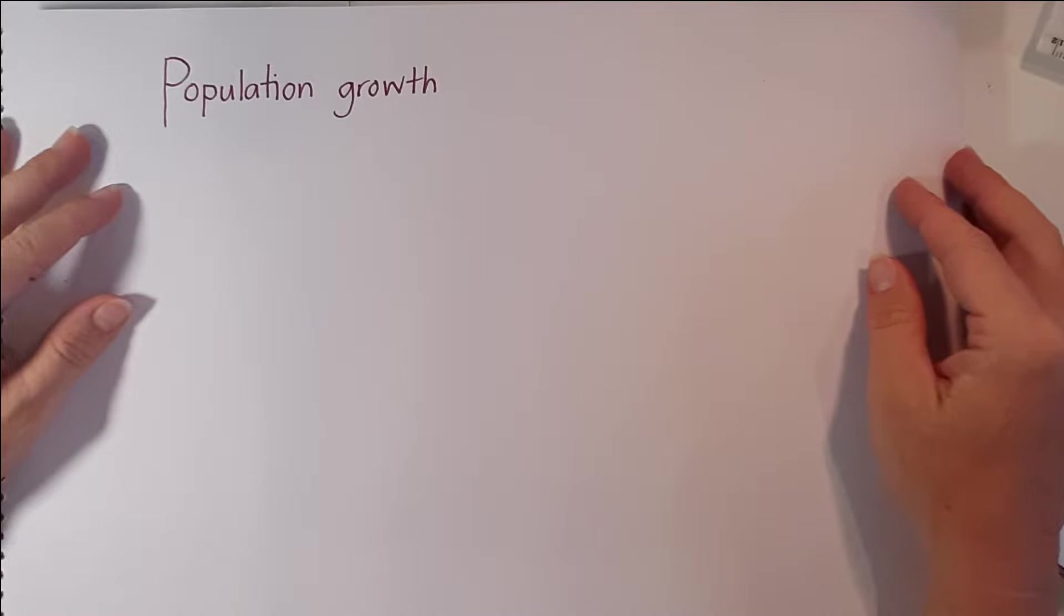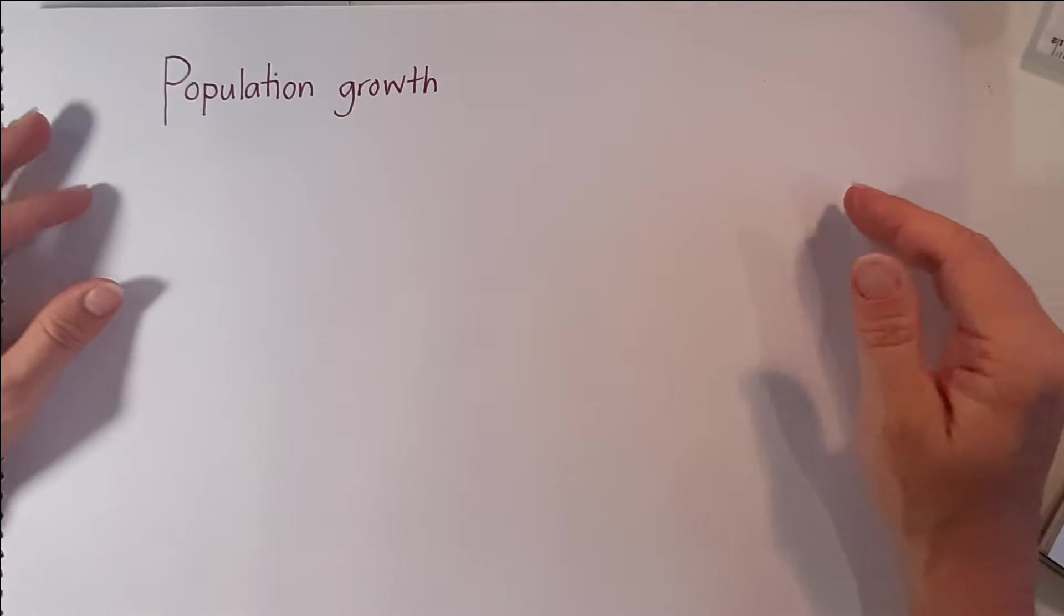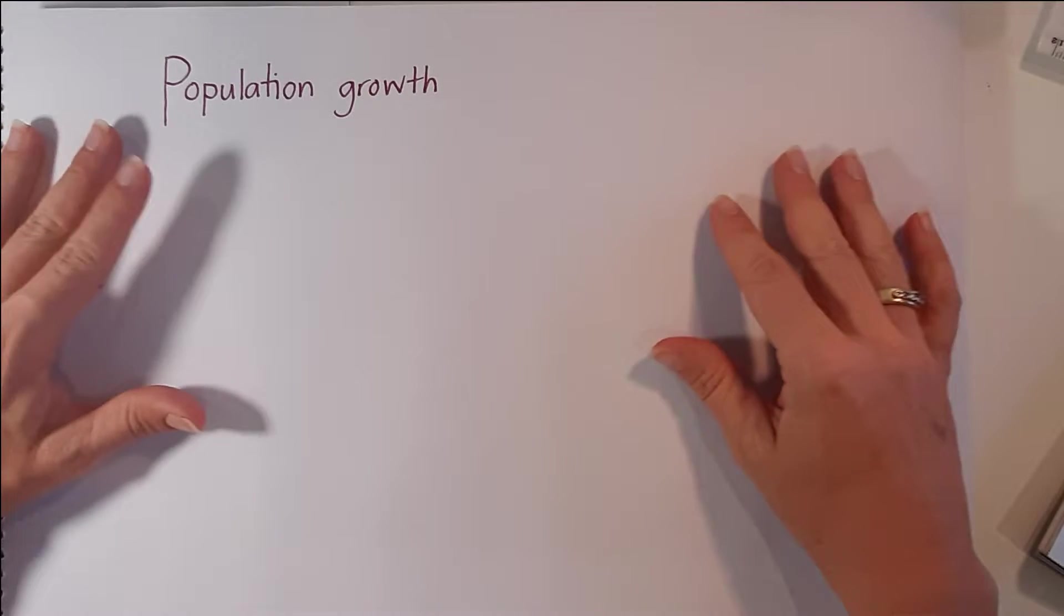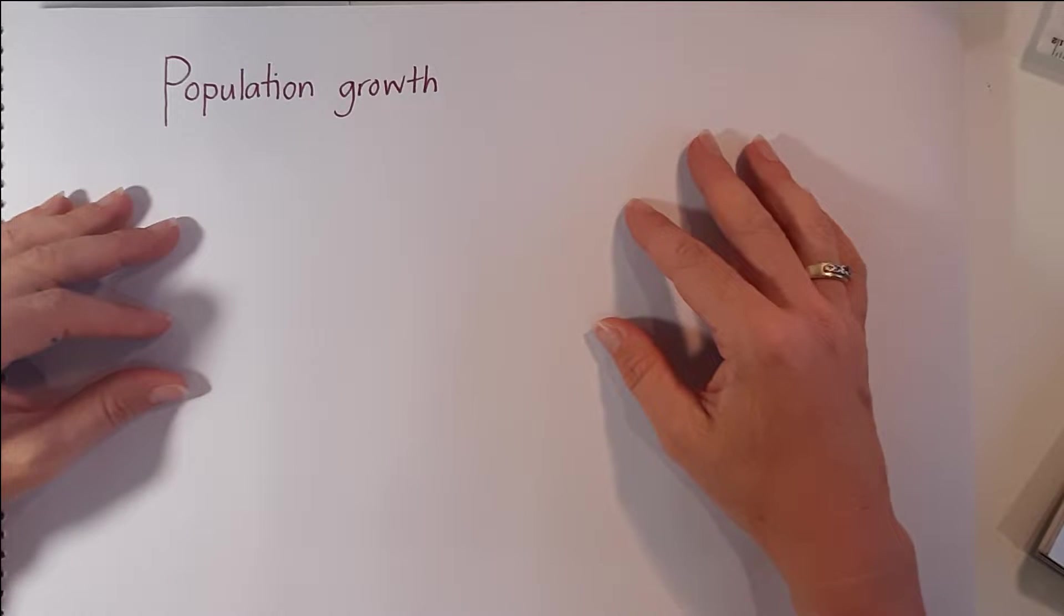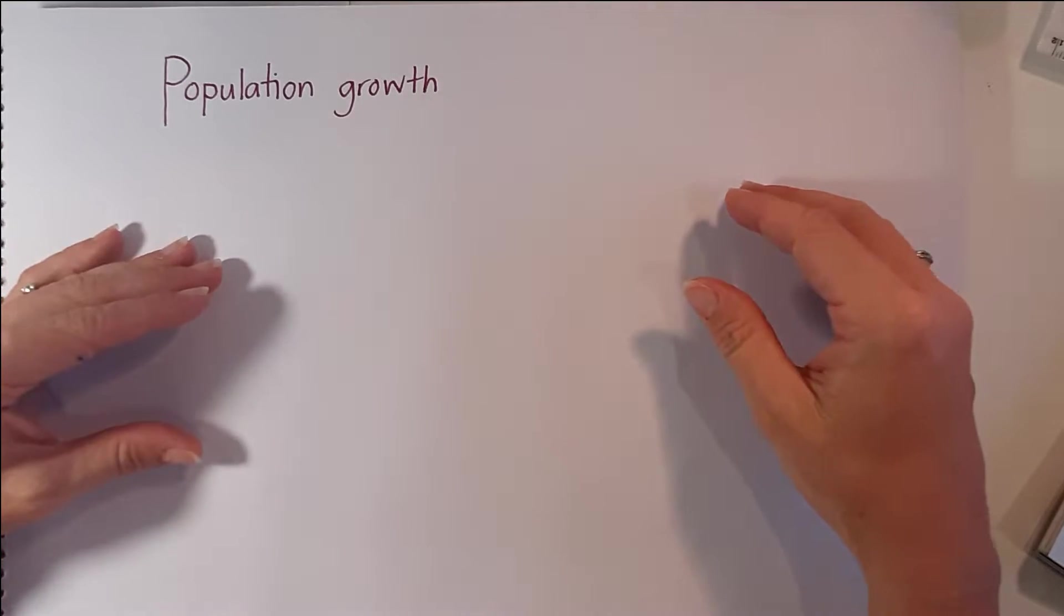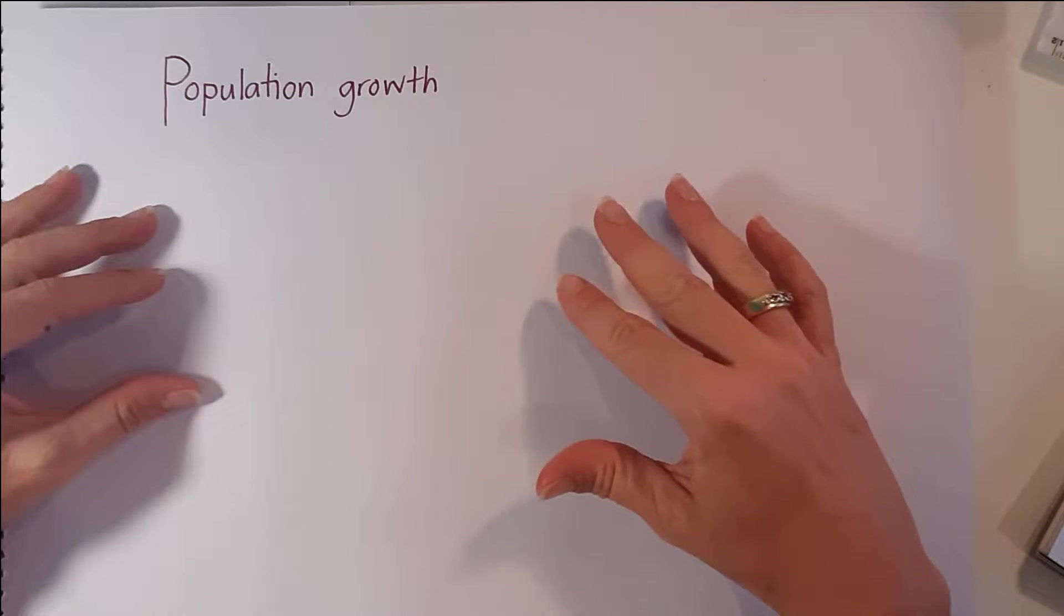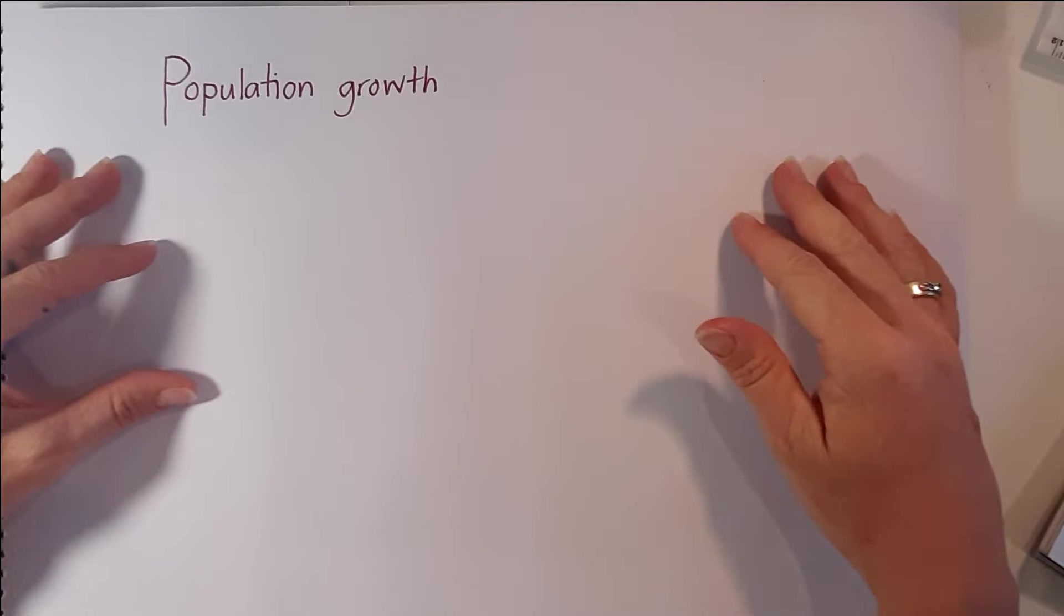This video looks at population growth, or how quickly a population changes in size over time. If we think about Outback Queensland, there are times where we might get mouse plagues. The mouse population size can increase very quickly, but then at the same time the population can decrease very quickly again back down to low numbers after a certain period of time.